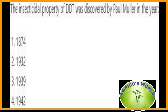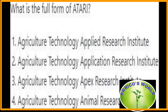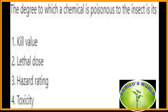The insecticidal property of DDT — dichlorodiphenyltrichloroethane — was discovered by Paul Müller in the year 1939. The full form of ATARI is Agricultural Technology Application Research Institute. The degree to which a chemical is poisonous to insects is its hazard rating.